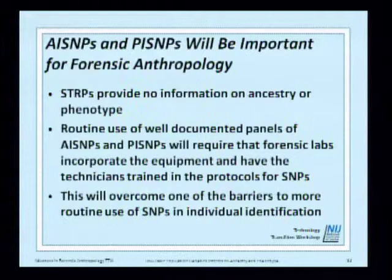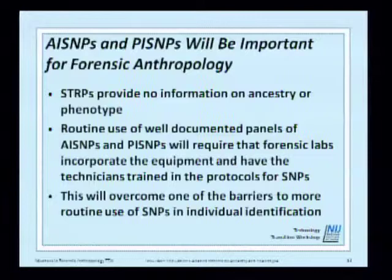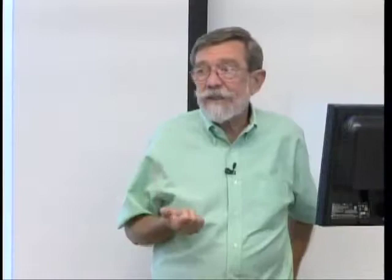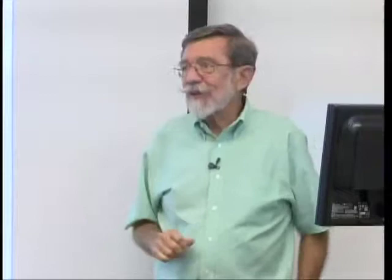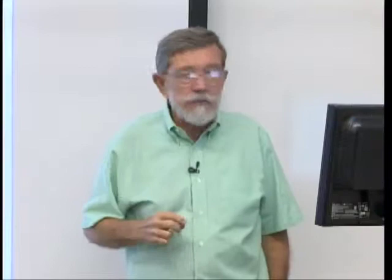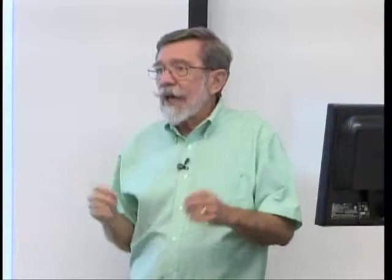SNPs — both ancestry informative, individual identification, and phenotype inference — are going to be very important in forensic anthropology. We can already begin to get some inference. There's a gene that seems to be involved in thin and wavy versus thick and straight hair. There are other things and several studies underway for facial inference based on SNPs — some very big ones, some not so big.